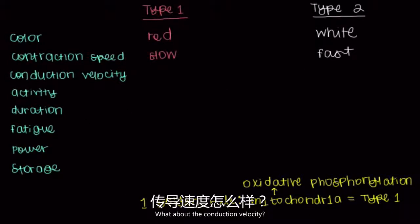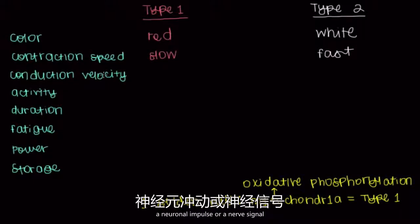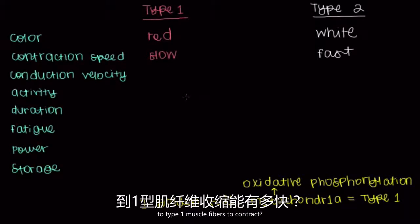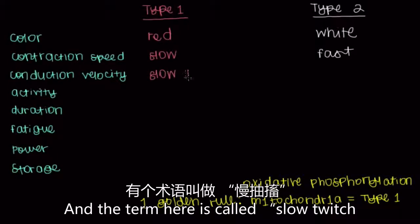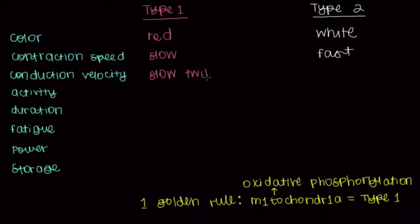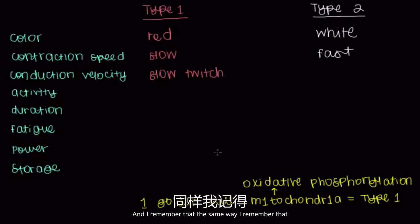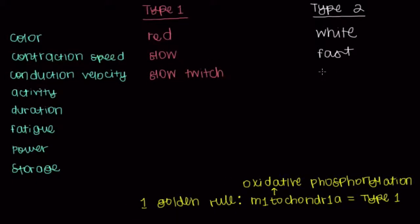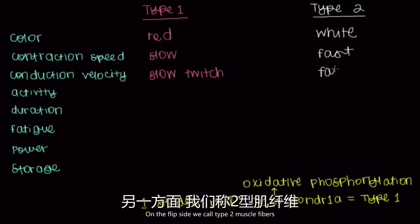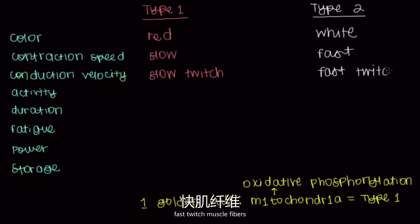What about conduction velocity — how quickly a neuronal impulse or nerve signal reaches type 1 muscle fibers to contract? This is also going to be slow. The term here is called slow twitch, and I remember that the same way I remember that contraction speed is slow in type 1 muscle fibers. On the flip side, we call type 2 muscle fibers fast twitch muscle fibers.